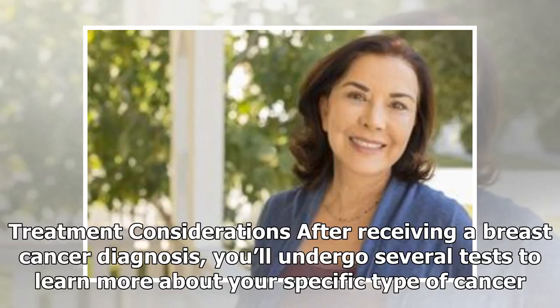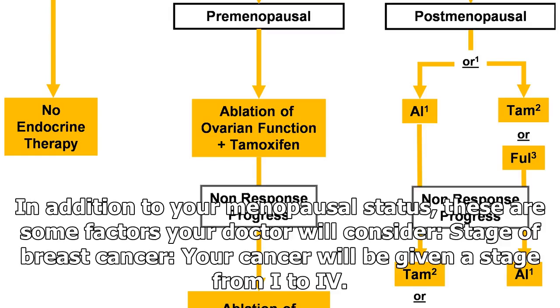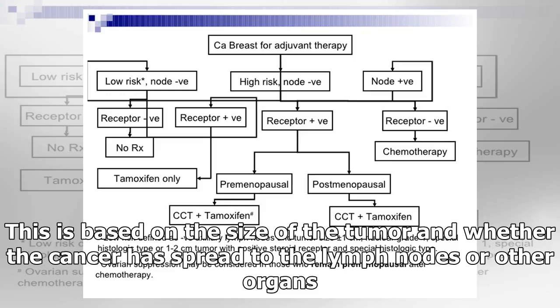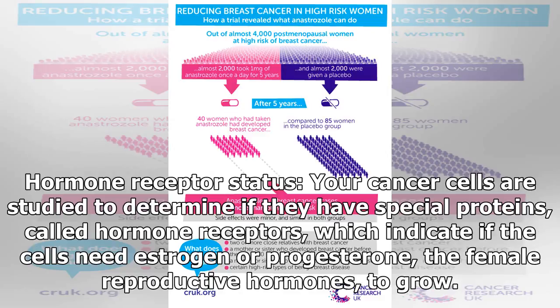After receiving a breast cancer diagnosis, you'll undergo several tests to learn more about your specific type of cancer. In addition to your menopausal status, your doctor will consider the stage of your breast cancer — your cancer will be given a stage from I to IV, based on the size of the tumor and whether the cancer has spread to the lymph nodes or other organs.